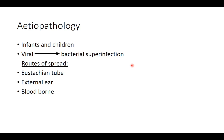The routes of spread are: via the Eustachian tube — any infection from the nose, paranasal sinuses, or nasopharynx can spread through the Eustachian tube into the middle ear; through a pre-existing perforation, where infection spreads from the external ear to the middle ear; and via the blood-borne route, which is very uncommon.